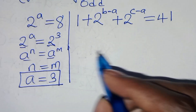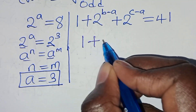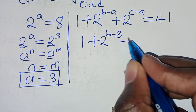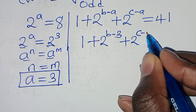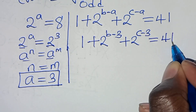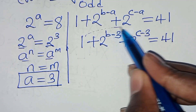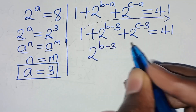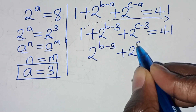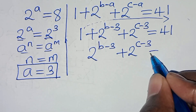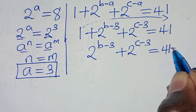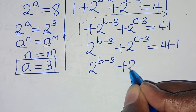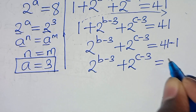Substituting a = 3 into the odd equation: 1 + 2^(b−3) + 2^(c−3) = 41. Moving 1 to the right-hand side gives 2^(b−3) + 2^(c−3) = 40.